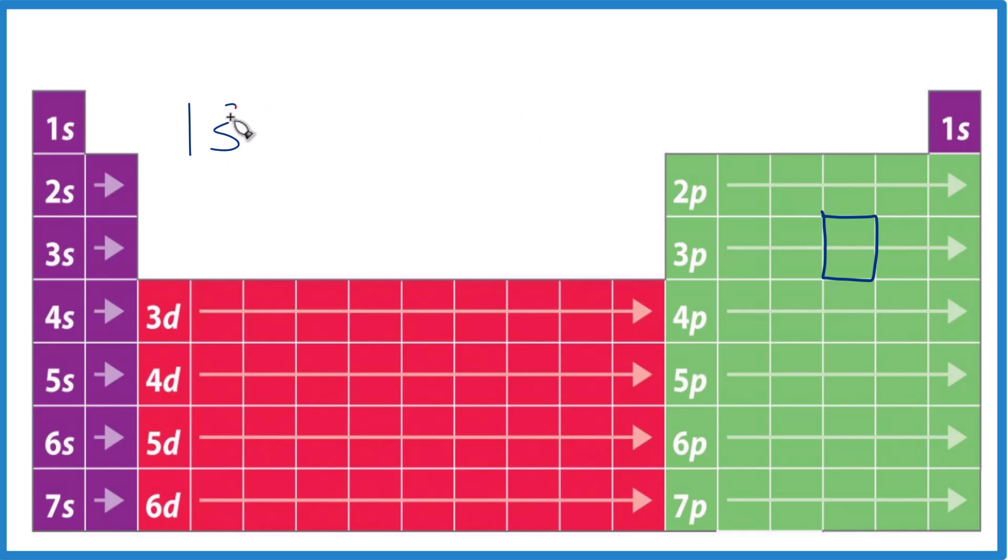That's full. S orbitals hold two electrons. Now we go to the next, 2s1, 2s2. That's full, but we're still in the same energy level. So 2p1, 2p2, 3, 4, 5, 6. P orbitals, they hold up to 6. And the second energy level, it's full.